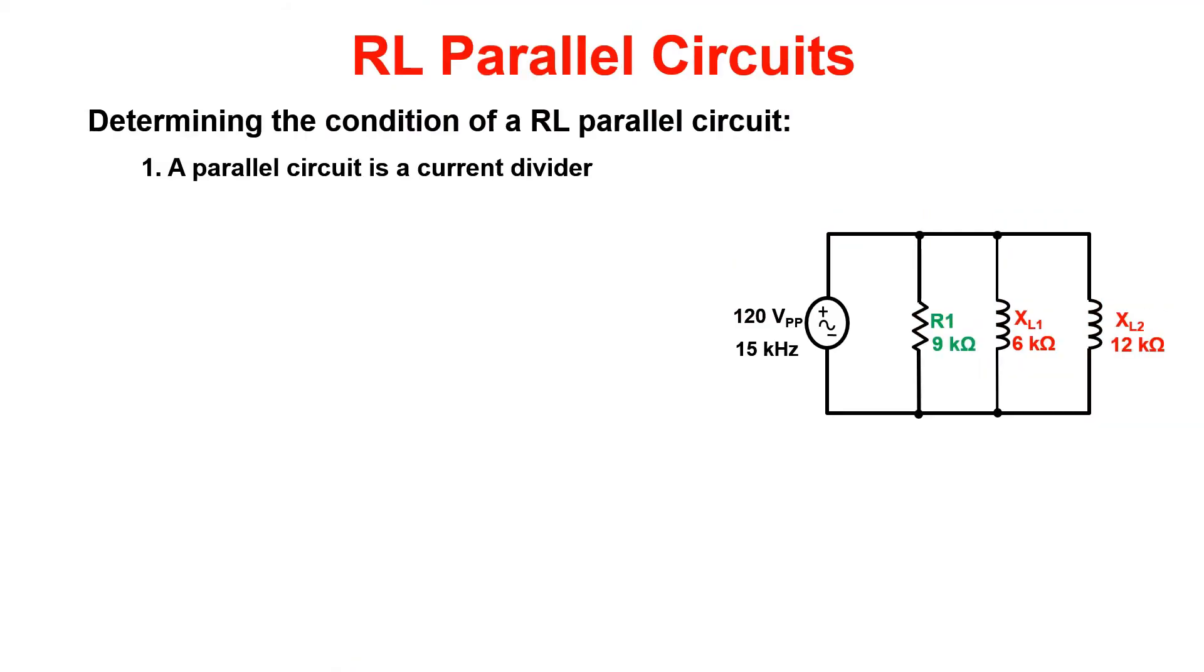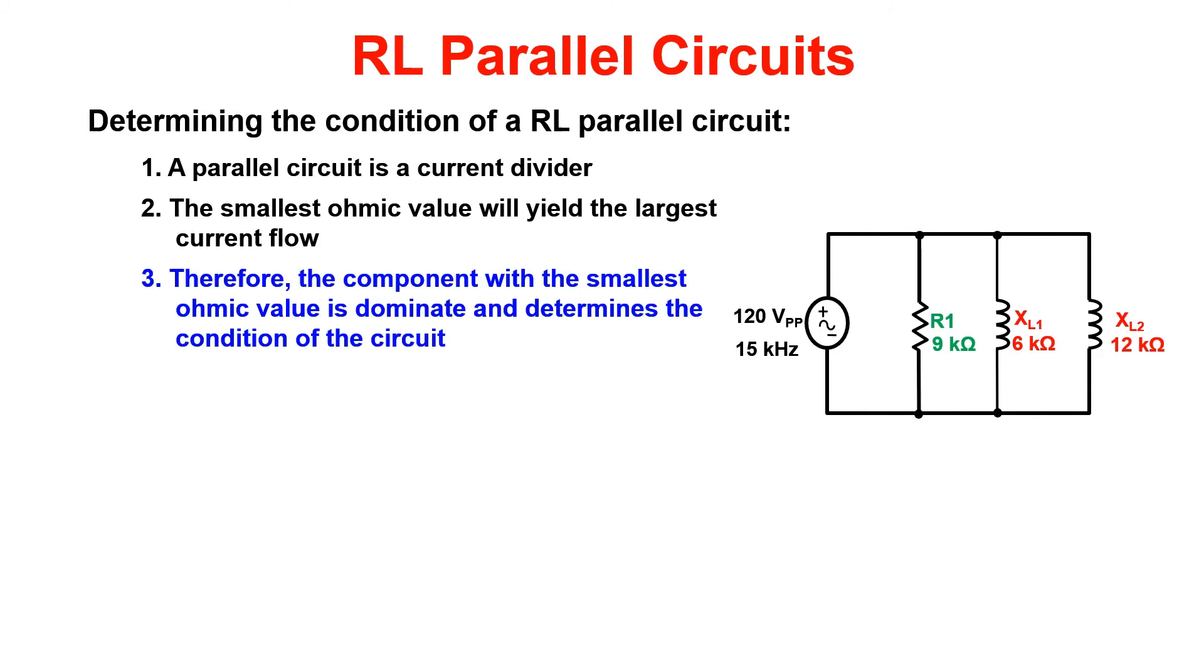A parallel circuit is called a current divider. The smallest ohmic value will allow the largest current flow. The component with the smallest ohmic value is dominant and determines the condition of the circuit.